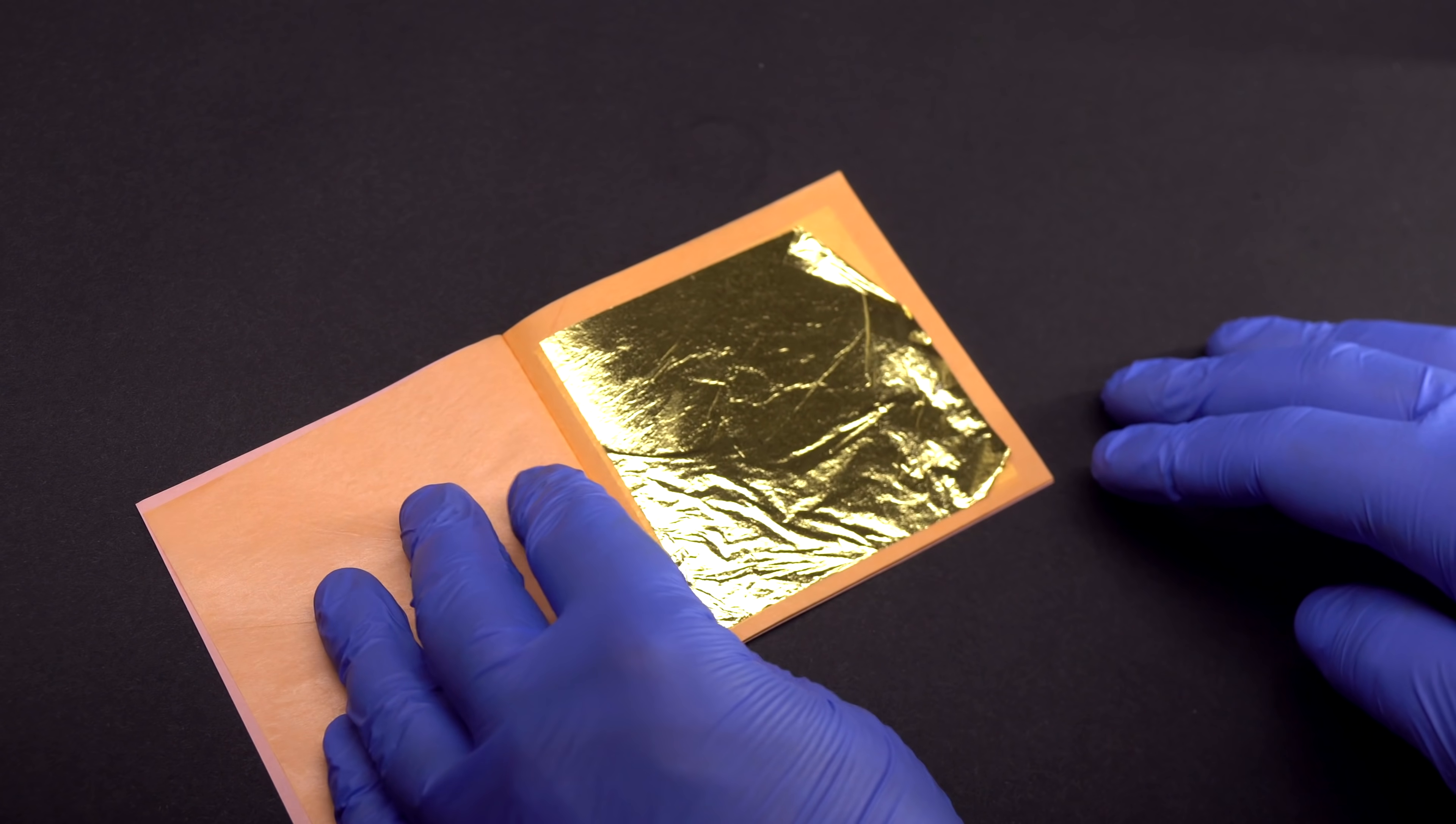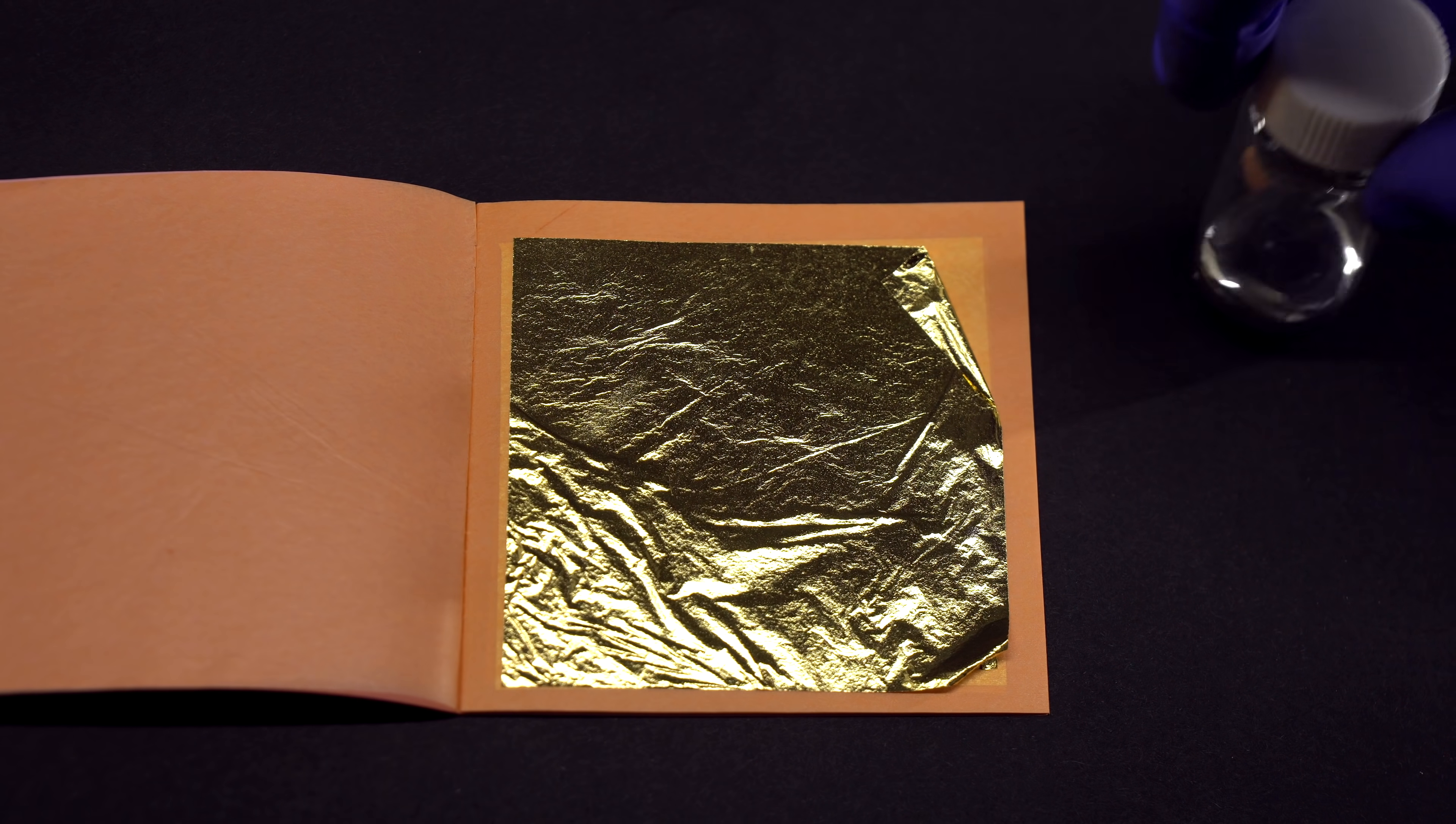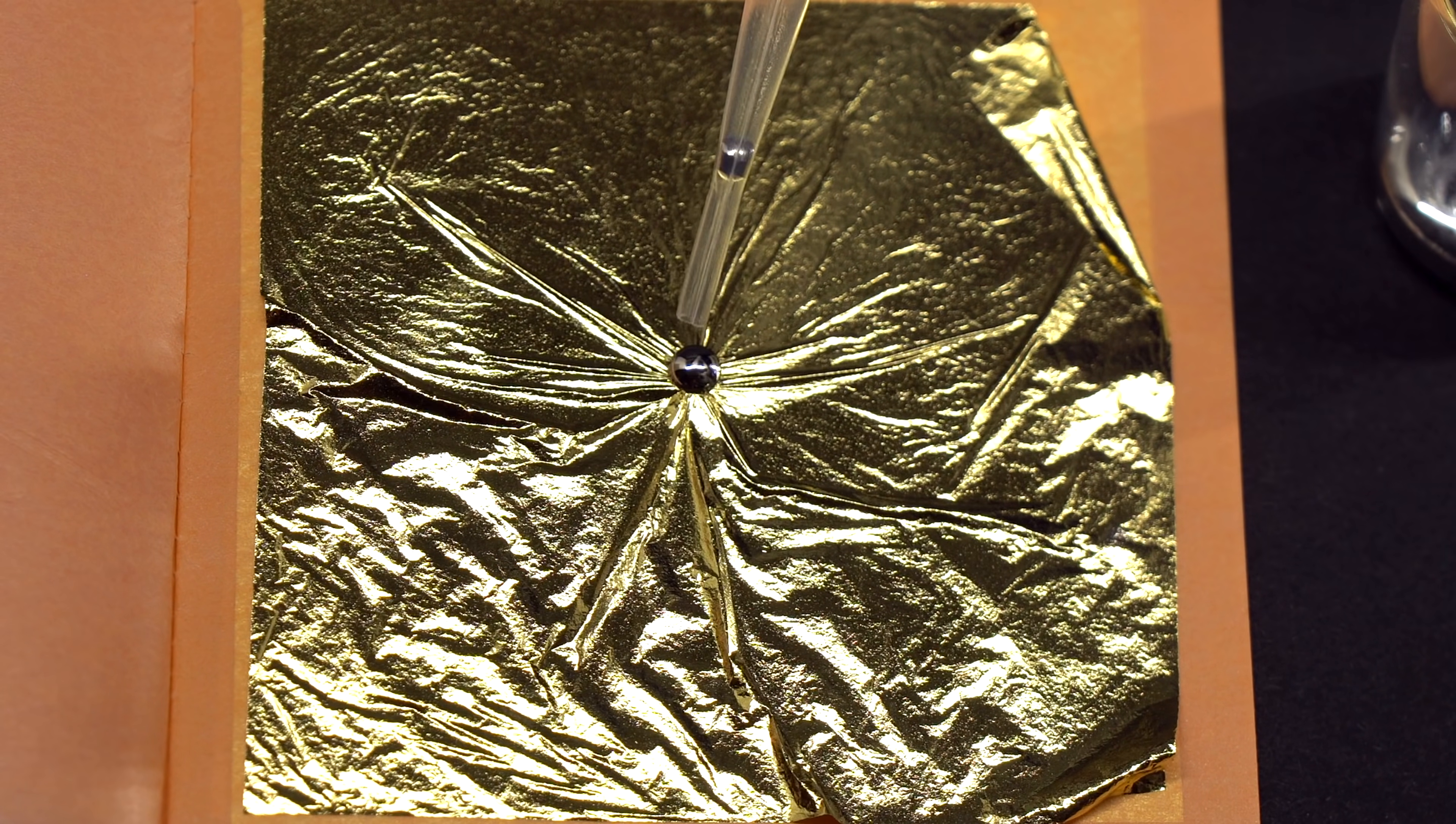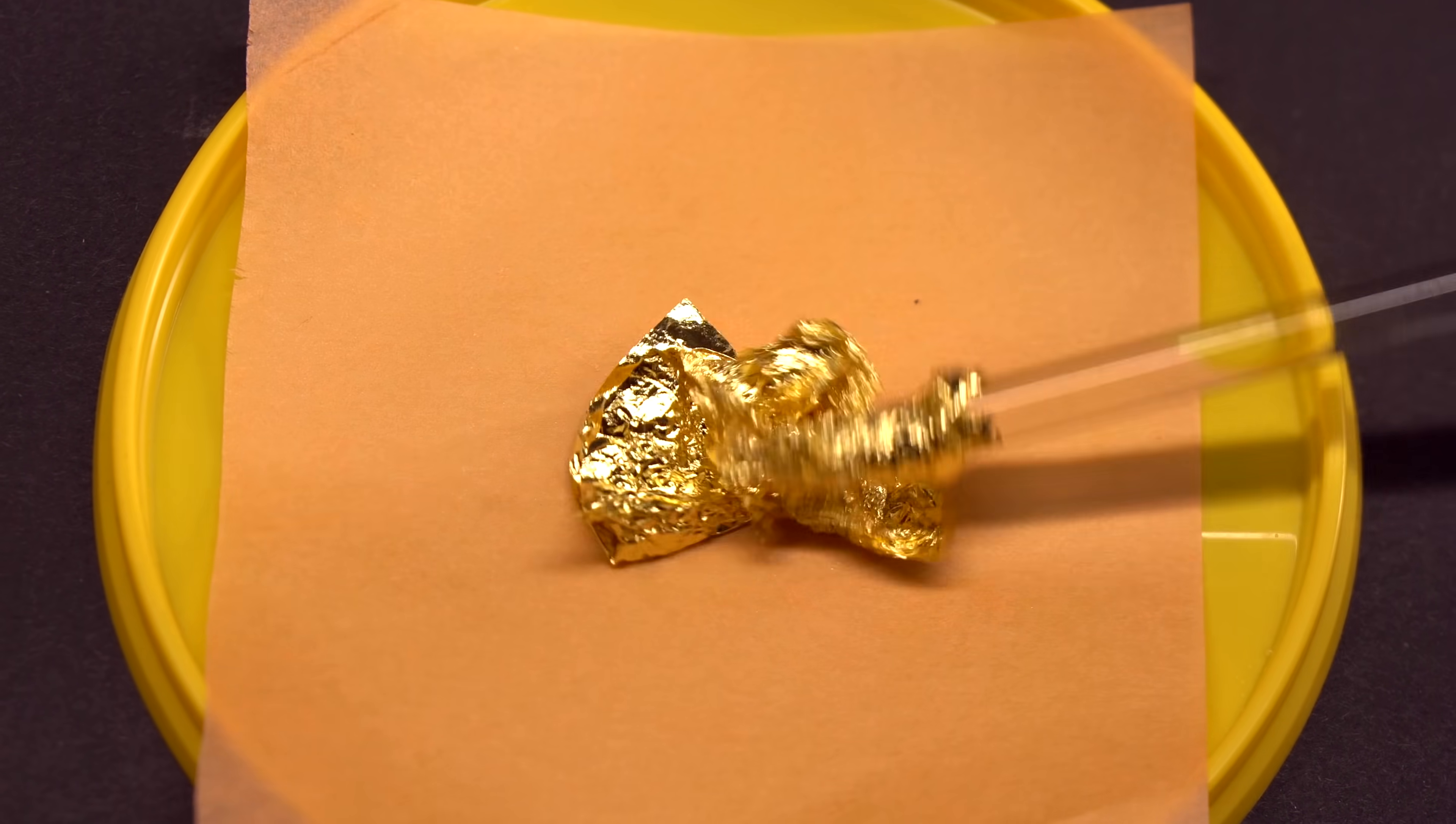Besides copper, mercury can also be alloyed with other noble metals. For instance, with gold. For my experiment, I have purchased thin gold foil sheets. When a drop of mercury is placed on a gold sheet, it immediately begins reacting with mercury.